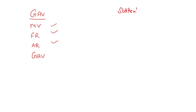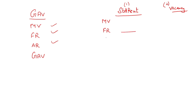But when Standard Rent is given in the question, there are two types. The first is the normal type, and the second is where Standard Rent is given along with a vacancy period. When Standard Rent is given, first take Municipal Value, then Fair Rent, and whichever is higher becomes your RLV.